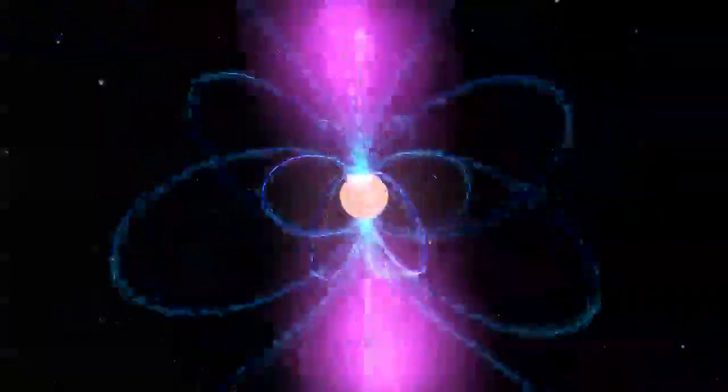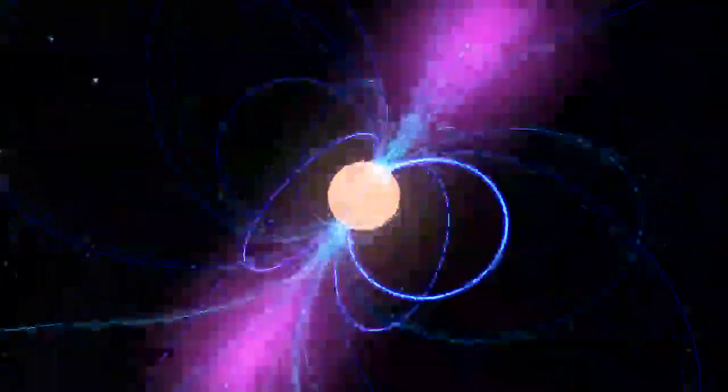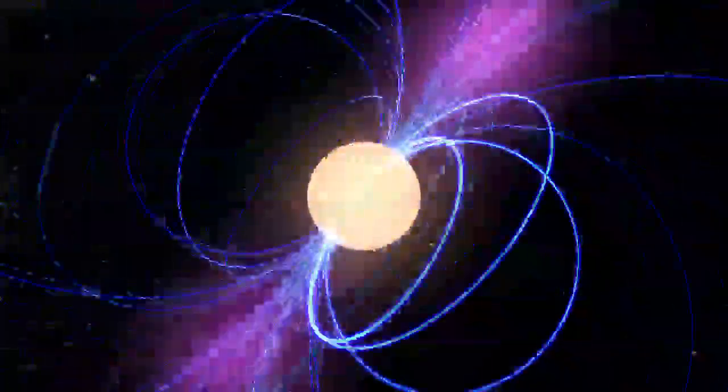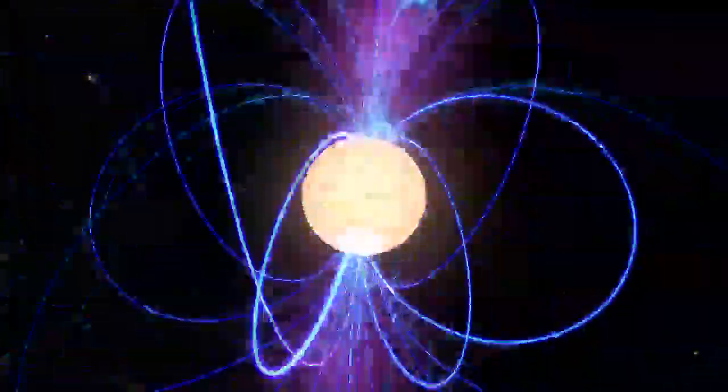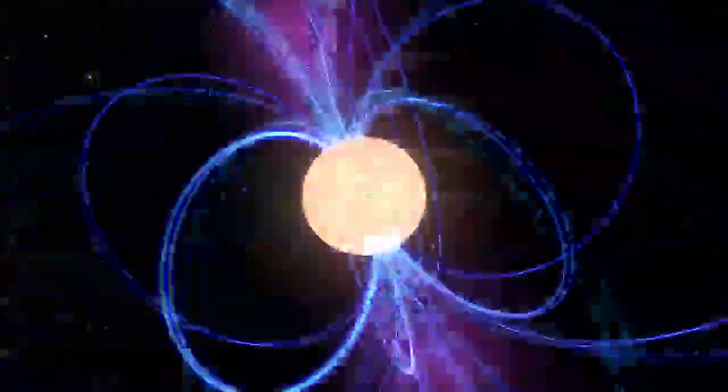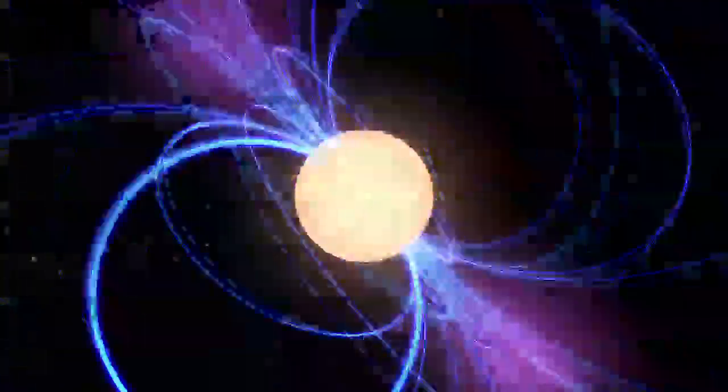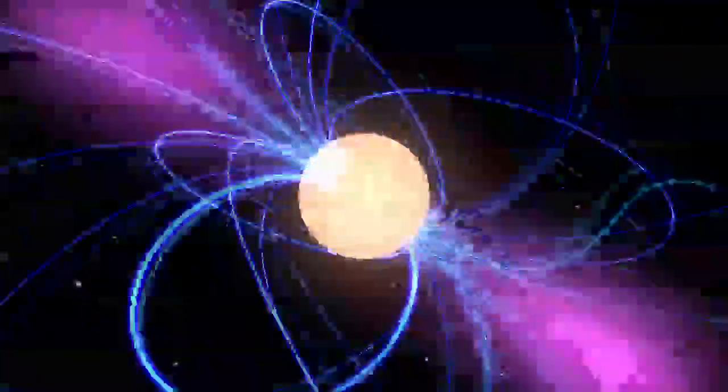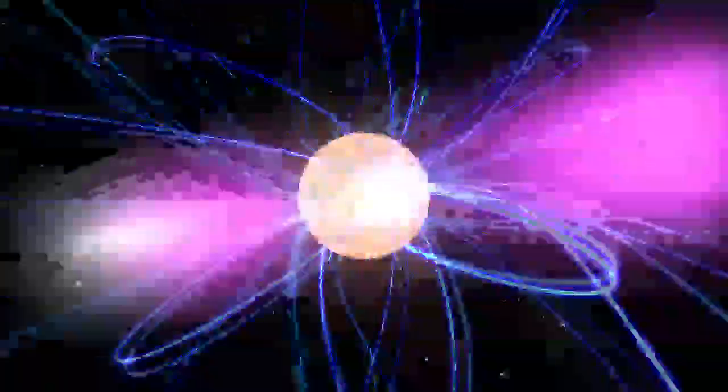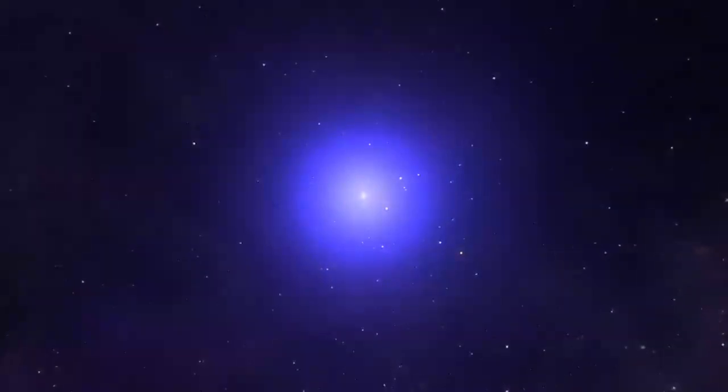Neutron stars spin between 7 and 40,000 times a minute and form with incredibly strong magnetic fields. Rapid spin and intense magnetic fields drive powerful beams of electromagnetic radiation, including gamma rays. As the pulsar rotates, these beams sweep the sky like a lighthouse. To a distant observer, the pulsar appears to blink on and off.